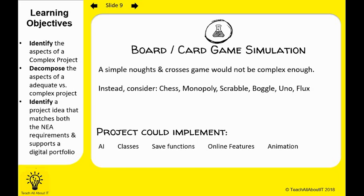These are aspects of a complex project — we always want to aim for the top marks and then adjust as we go. Potentially you could implement artificial intelligence if you are playing against the computer. We can have classes and objects, save to a text file, and you could implement TCP/IP with online features. Be careful with animation because your interface is not what's being marked — it is your technical ability. Remember: function over form.